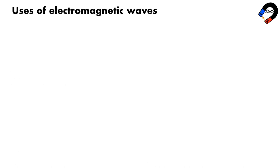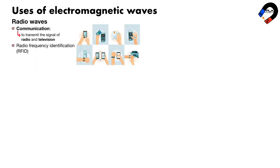Uses of electromagnetic waves. Radio waves are used to transmit signals for radio and television. They are also used in cellular networks, GPS, and Wi-Fi. Radio frequency identification (RFID) tags use radio waves to identify people or objects, used in applications such as inventory tracking, access control, and payment systems. Bluetooth is used to communicate between two Bluetooth-compatible devices. Radio telescopes are used to observe naturally occurring radio waves from stars, planets, galaxies, and other astronomical objects.